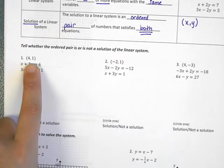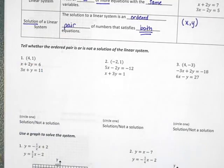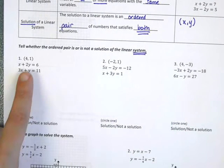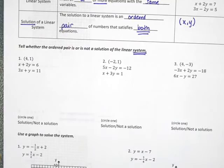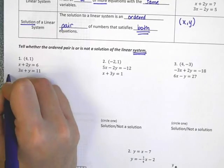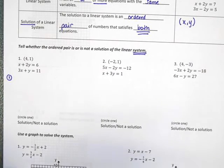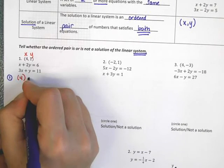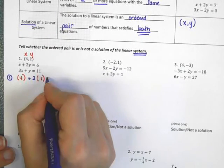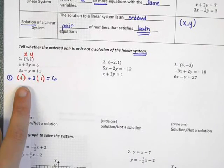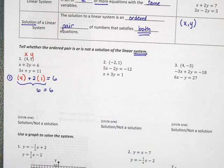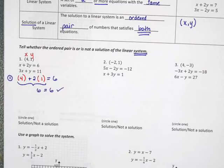In problem number one, they are asking us to check to see whether the ordered pair is or is not a solution of the system of equations. We need to check that this combination of x and y values works for both equations. First, we are going to check equation one. In this ordered pair, x is four and y is one. So I'm going to substitute into equation one: four plus two times one equals six. Since six really does equal six, this ordered pair is a solution of the first equation.